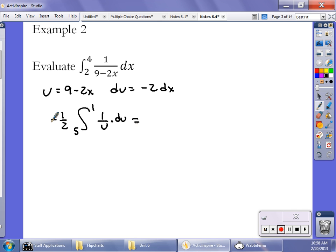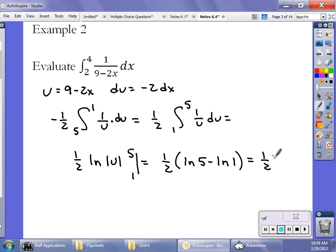1 over u times du. If I change that by taking out the negative, I can rewrite it as 1/2 times the integral of 1 to 5 of 1 over u du, which is 1/2 times the ln of the absolute value of u at 1 and at 5. And in this particular case, I get 1/2 times the ln of 5 minus the ln of 1. The ln of 1 is 0. So really this answer would be just 1/2 ln of 5.